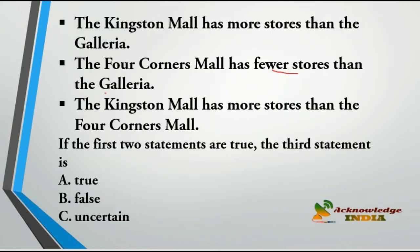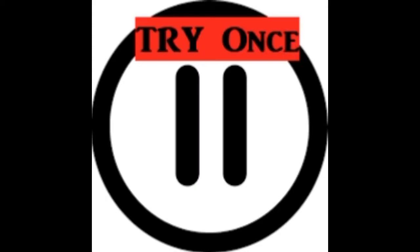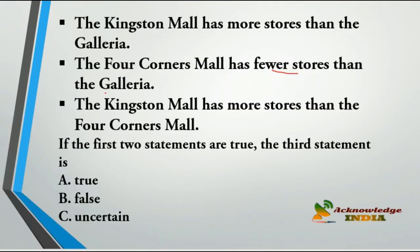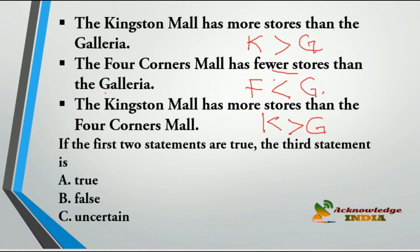Problem 2: The Kingston Mall has more stores than Galleria. The Four Corners Mall has fewer stores than Galleria. The third statement is: Kingston Mall has more stores than Four Corners Mall. Since Kingston is greater than Galleria, and Galleria is greater than Four Corners, the third statement is true.